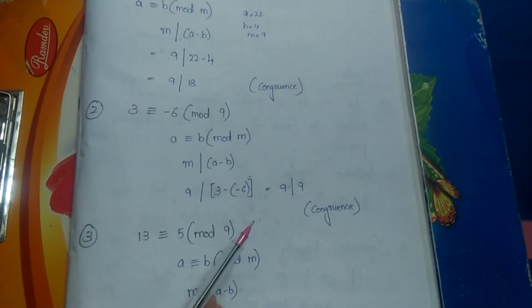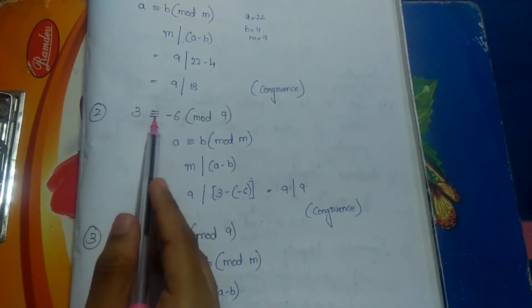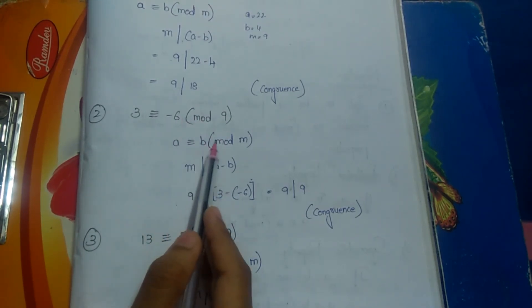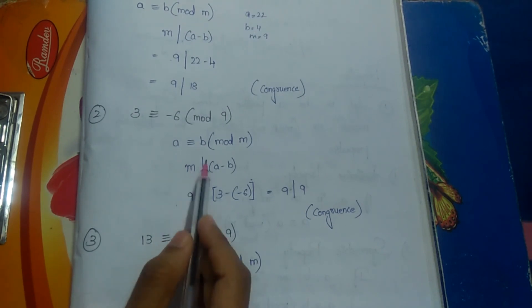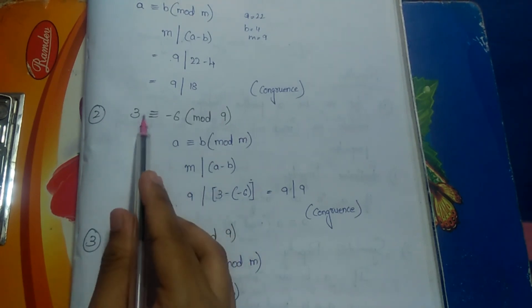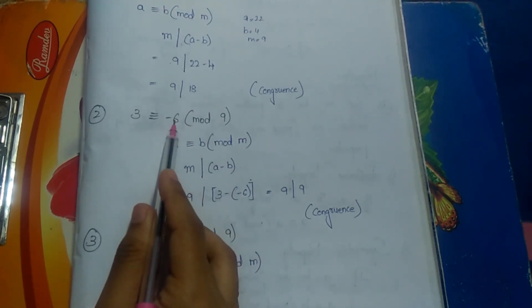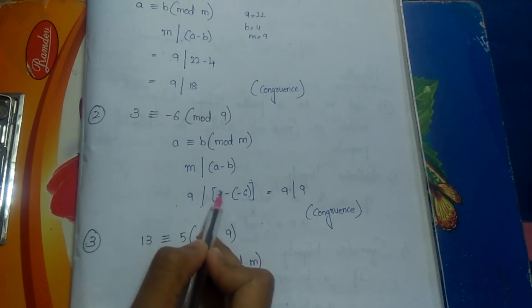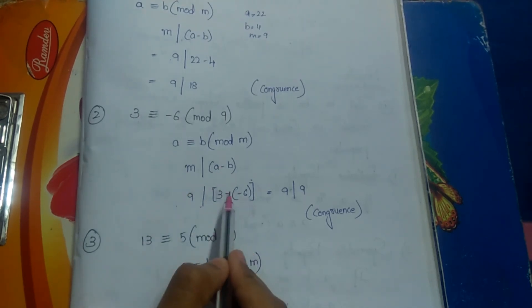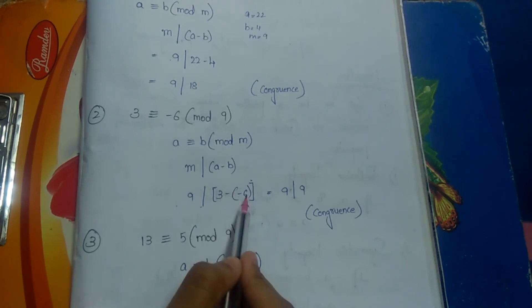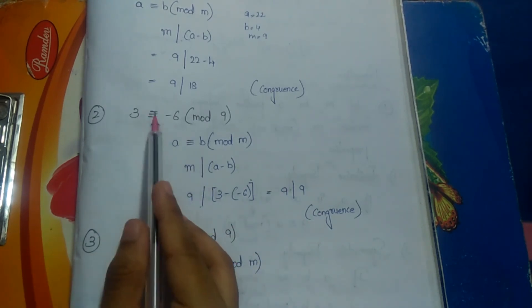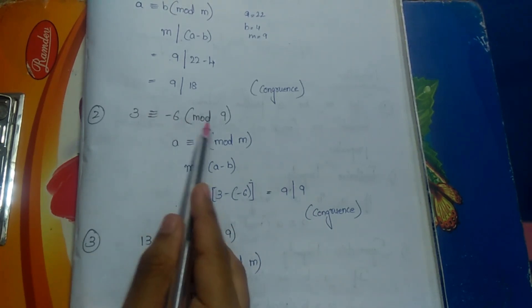Second example: is 3 congruent to minus 6 modulo 9? Here m = 9, a = 3, b = −6. So 9 divides 3 minus (−6), which becomes 3 plus 6, giving 9 divides 9. Therefore 3 is congruent to −6 modulo 9.